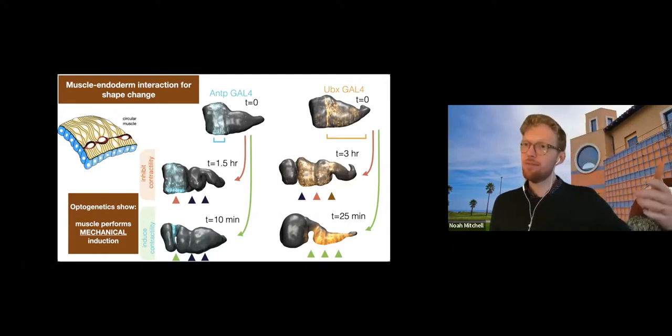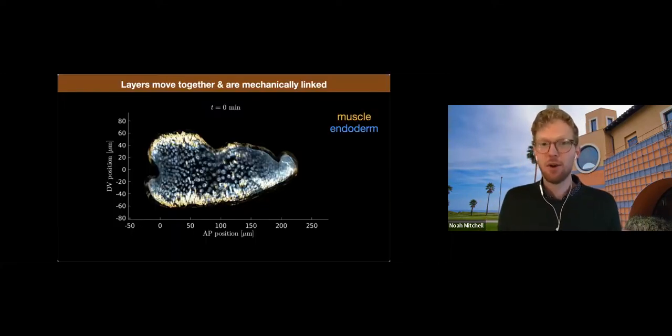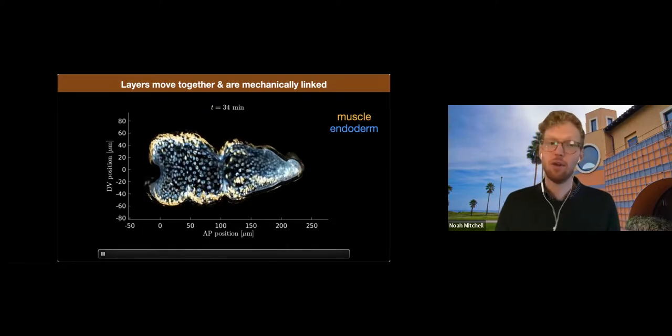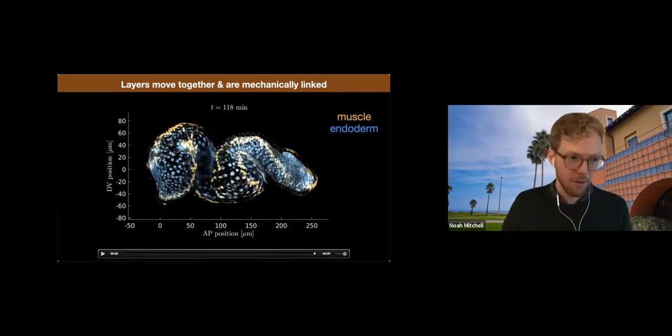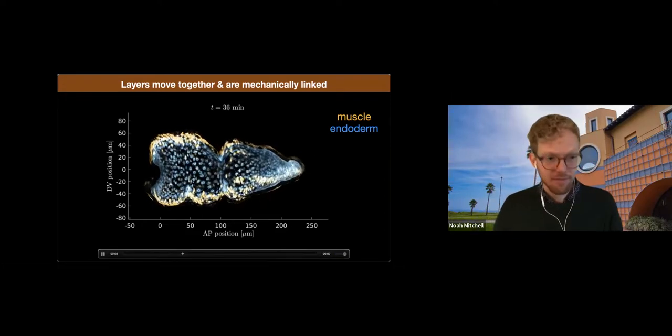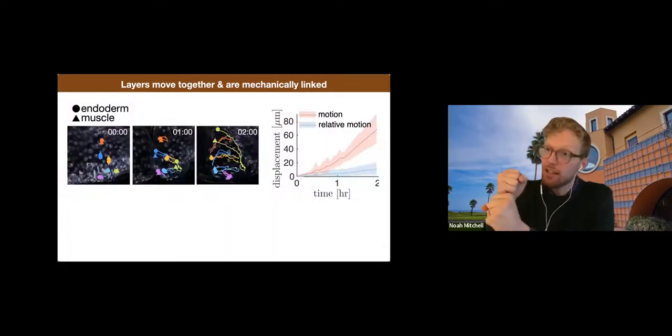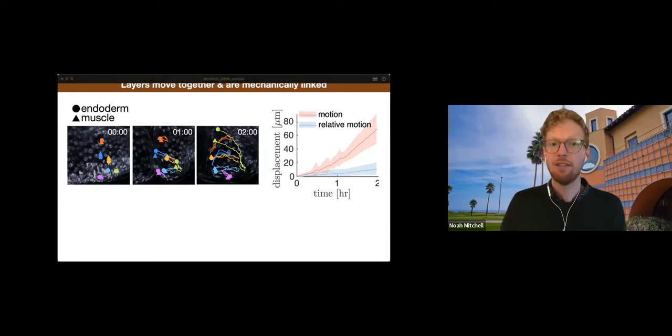So then how does the endoderm react? What is the coupling, the mechanical interaction or genetic interaction that results? So in wild type, we find that these two layers move together. By analyzing movies in which both layers are labeled, we can see that the yellow cells, the yellow muscle cells, and the blue endodermal cells are co-moving. I can play that one more time. And so by looking at movies such as this, we can really confirm this result that by tracking initially close pairs of cells in either layer, we see that for the most part, they move together and their relative motion here in blue is very weak compared to the overall motion of the cells. So in the wild type, these layers are mechanically linked if they're tethered together.